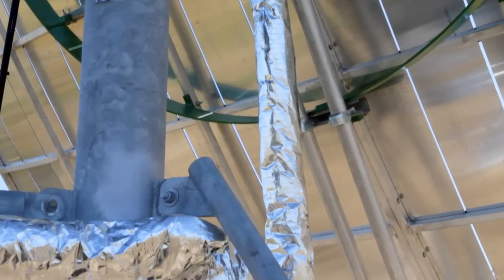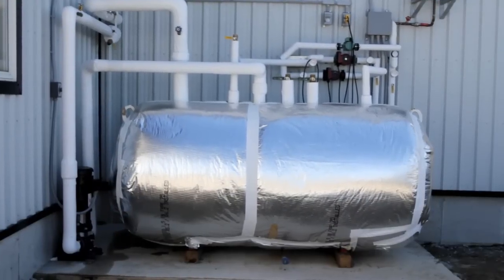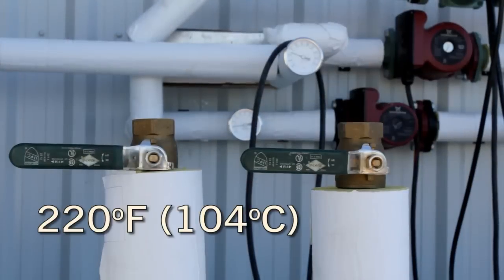A food-grade glycol is pumped through the focal point and returned to a water tank equipped with a heat exchanger at 220 degrees Fahrenheit.